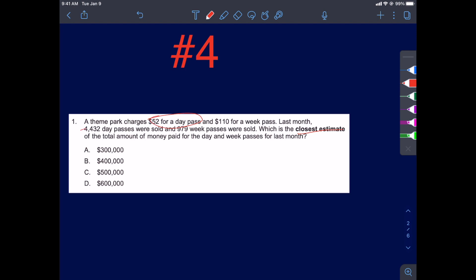We might get a good estimate, and then it might not be one of these numbers, so we're going to have to see which one it's closest to. We have the price of a day pass and the number of day passes. And we have the price of a week pass and the number of week passes. If we were to estimate day passes, let's change that to 50. 4,432. Should we go to 4,500? Should we go down to 4,000? Let's start with just 4,000. That'll keep multiplication real easy. We know that we went down on both of these numbers. So our estimate is looking to be less than the actual answer so far.